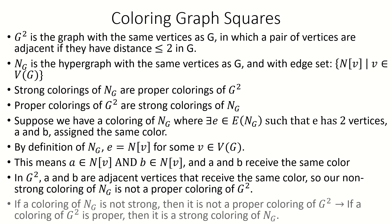We can now say that if a coloring of N sub G is not strong, then it's not a proper coloring of G squared. But considering that every coloring of G squared is a coloring of N sub G and vice versa, this statement is equivalent to: if a coloring of G squared is proper, then it's a strong coloring of N sub G.